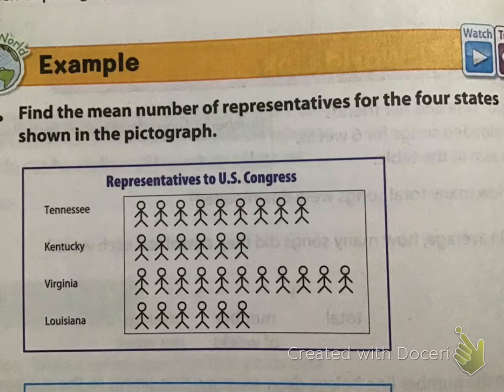I like to remember that it's called the mean and that it's the average, because on average, people are mean. We're going to look at this. Find the mean number of representatives for the four states shown in the pictograph. It's called a pictograph because it is a graph with little pictures.